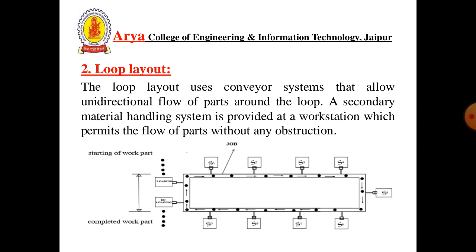Second is Loop Layout. The loop layout uses a conveyor system that allows unidirectional flow of parts around the loop. A secondary material handling system is provided at each work station, which permits the flow of parts without any obstructions. The loading station and unloading station are both on one side.